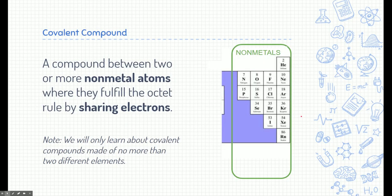So what is the definition of a covalent compound? Well, a covalent compound is a compound between two or more non-metal atoms where they fulfill the octet rule by sharing electrons. So the big important terms here, non-metal atoms sharing electrons. Now, in this class, in this module, we're only really going to learn about simple covalent compounds. Or what I mean by that is covalent compounds made of just two different types of elements. There are lots of covalent compounds made of many different types of elements. As long as they're all non-metal, they're covalent. But we're just going to simplify and talk about simple covalent compounds.